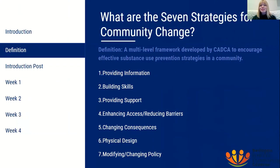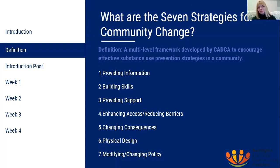So what are the seven strategies for community change? They are a multi-level framework developed by CADCA to encourage effective substance use prevention strategies in the community. The multi-level part of this theory is broken down into an individual level and an environmental level. At the individual level, we have those first three strategies, which are providing information, building skills, and providing support.